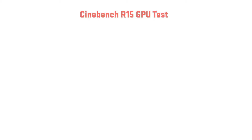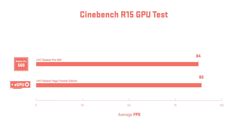The third benchmark I used was Maxon's Cinebench R15. This is a pretty industry standard benchmark in terms of compute and GPU performance, so the results were a little shocking — I would imagine the Vega Frontier would be way better than the RX 560, but the numbers don't lie and it seems like that gap is very narrow.